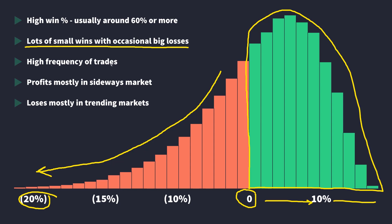This kind of profit distribution is typical for mean reversion strategies. They normally have a high win percentage — even more than 70% in some cases — but this goes hand-in-hand with the average losing trade being significantly bigger than the average profitable trade. This is just how it works in trading and in the markets in general. There's always a trade-off for anything you do, and it's wise to think about this when you build your trading strategies or even just when doing research.